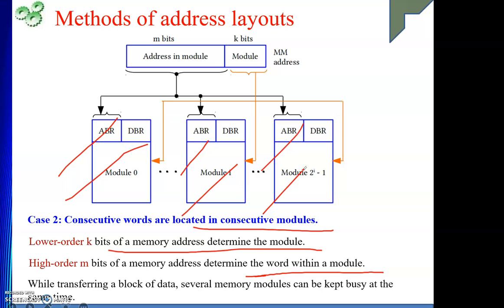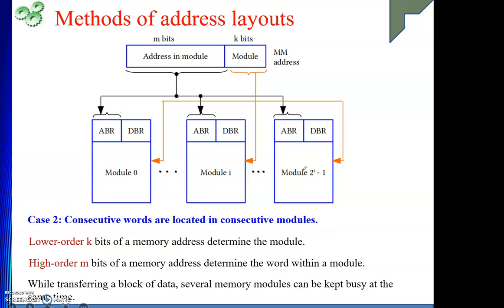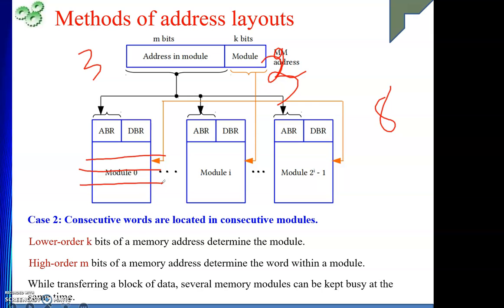When designing this arrangement, if two bits are used for module number, we should have four memory modules. If three bits are used for module number, we should have eight memory modules. And if three bits represent address inside a module, each module should hold eight data bytes. Otherwise there will be gaps in memory addresses — some addresses that are non-existing — called gaps in the address space. This is about how to place data in various modules.